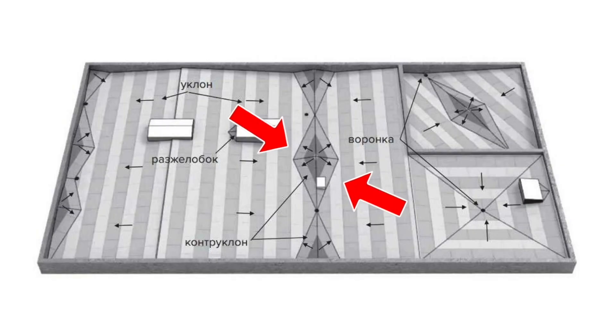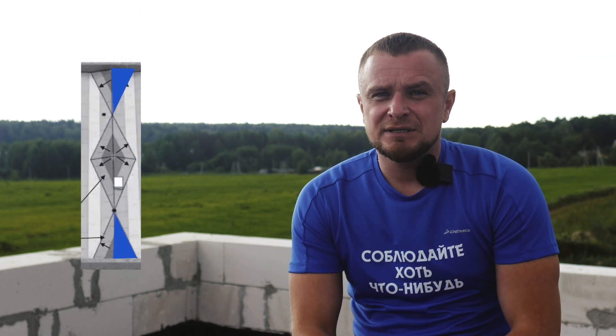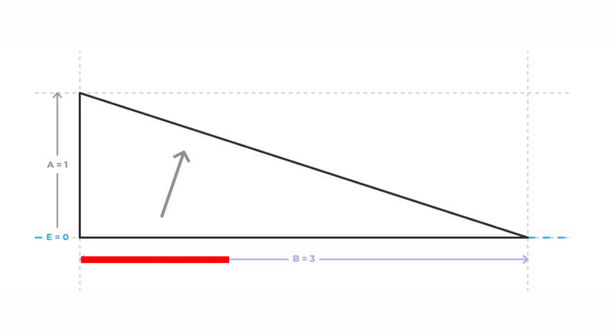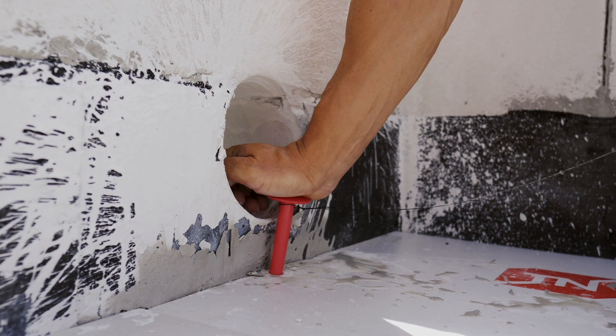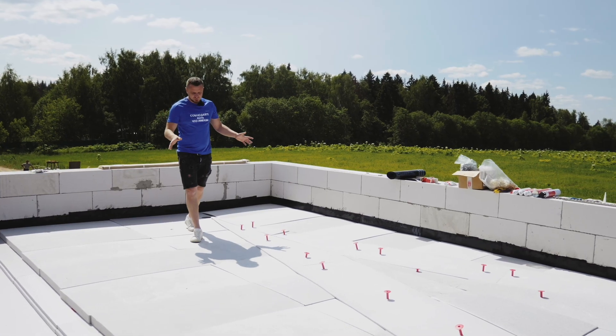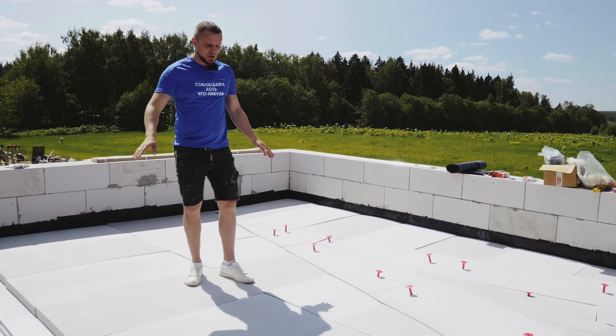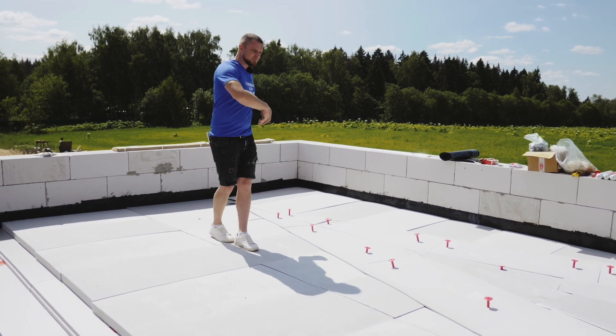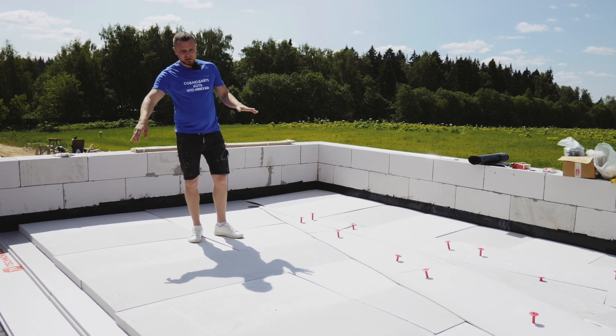Контруклоны нужны для формирования так называемых «бабочек», которые направляют поток воды непосредственно в воронку, в отличие от основного уклона, который даёт направление воде в ту или иную сторону кровли. Бабочка обычно состоит из 4 элементов в яндове и из 2 элементов в зоне парапета. Размер одного элемента бабочки рассчитывается 1 к 3: если длина яндовы 3 метра и надо согнать воду в одну воронку, то отступить от яндовы для формирования контруклона необходим 1 метр. Уклон и контруклон делаются между слоями: укладываем первый слой, основной уклон, затем второй слой и контруклон. На этом объекте всё сделано между вторым и третьим слоями утепления.